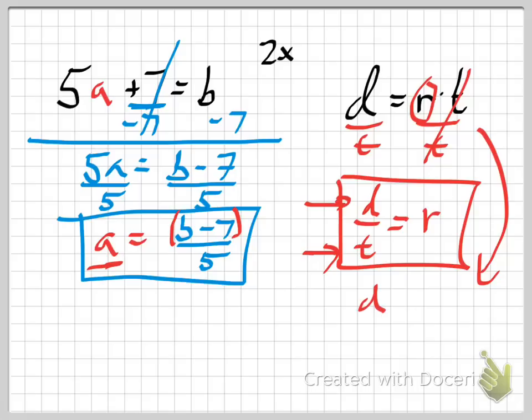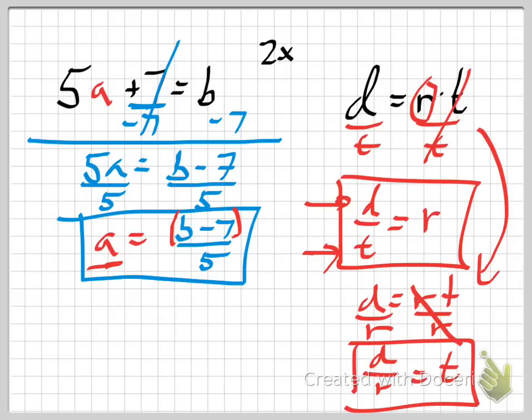Then I would have just divided both sides by R. So I start with D equals RT. This time, divide out the R. And you'll find that the distance divided by the speed is equal to the time. Which would make sense.